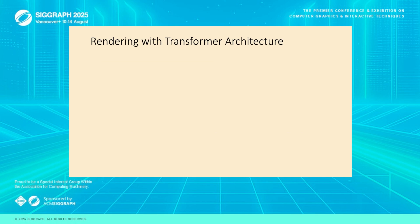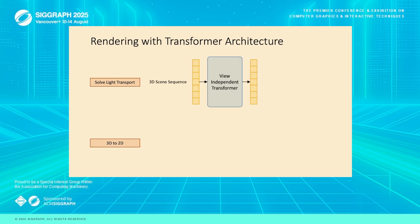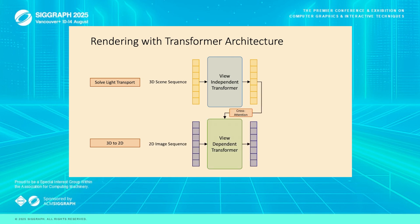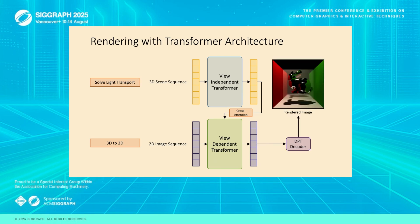With our input and output sequences defined, the model needs to resolve two main problems. First, it has to resolve the light transport in the scene — this part is view-independent and doesn't change no matter where the camera is. Second, it has to translate the 3D scene into a 2D image, which is view-dependent. Because these two tasks are so distinct, we split the entire process into two separate transformers. The 3D scene tokens go through a view-independent transformer whose only job is to calculate the light transport, creating an intermediate representation of the illuminated 3D scene. Then these transformed 3D triangle tokens are combined with our 2D camera ray tokens inside the view-dependent transformer using cross-attention. As a final step, these tokens are passed through a DPT decoder to produce a final high dynamic range RGB image.